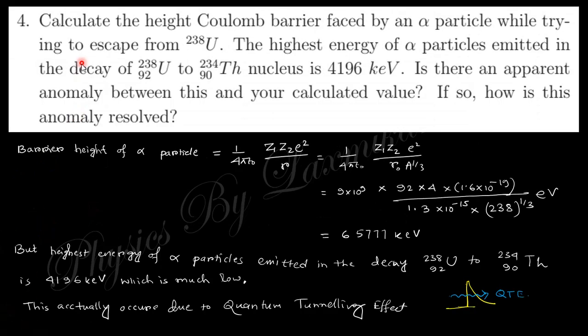Next question: calculate the height of Coulomb barrier faced by an alpha particle while trying to escape from ²³⁸U. The highest energy of the alpha particle emitted to this one. Actually barrier height of alpha particle is written as just 1/(4πε₀) times charge by distance. So if you put this value and r is r₀A^(1/3), if you put this value you will obtain this amount of energy.